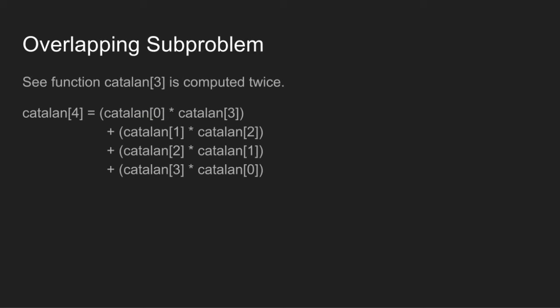We can observe that recursive implementation does a lot of repeated work. It computes Catalan of 3 twice. Since subproblems are evaluated again, this problem has overlapping subproblems property. So recomputation of same subproblems can be avoided by constructing array Catalan in bottom-up manner. We can use dynamic programming for this.